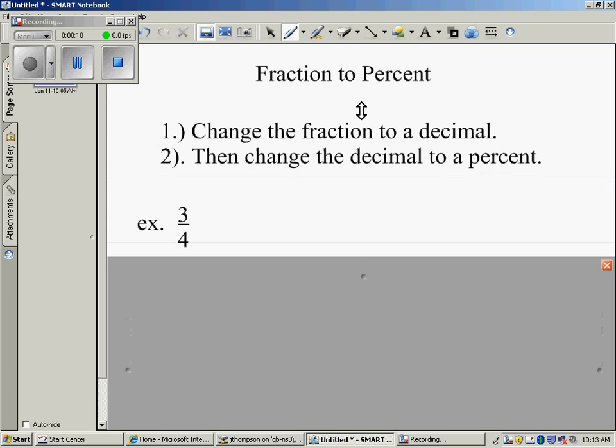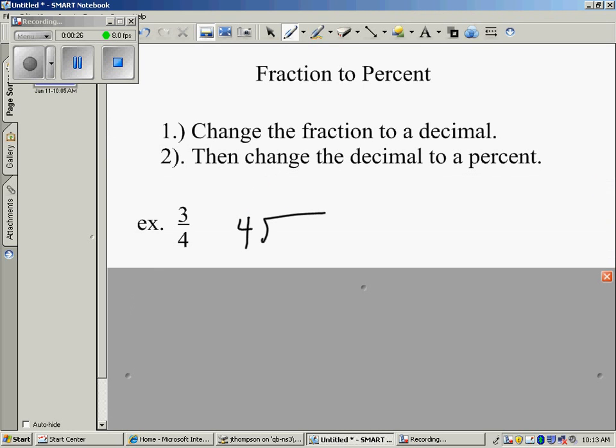Let's take a look at our first example. Here we have 3 fourths. To change 3 fourths as a fraction into a decimal, remember we're going to divide the bottom into the top. 4 does not go into 3 and that's why we add the decimal point. We'll bring it up and we'll add a few zeros.